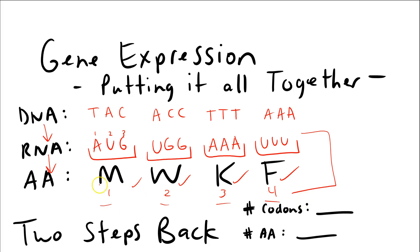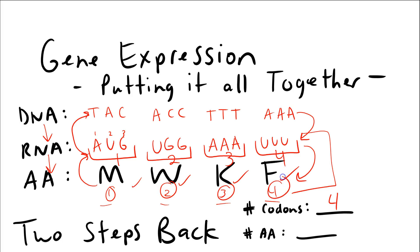We've taken two steps backwards — from amino acid to RNA, then RNA to DNA. Now take two steps forward and do gene expression to verify you get the same amino acid sequence. Since there's no stop codon here, the four codons match up to four amino acids exactly. I hope that helps — it's basic gene expression. Check back for videos showing other aspects of gene expression.